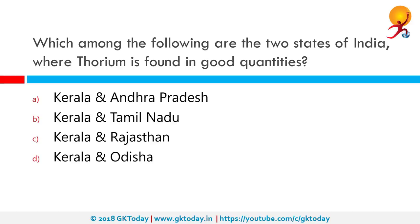Which among the following are the two states of India where thorium is found in good quantities? The correct answer is Kerala and Rajasthan. India has one of the largest supplies of thorium in the world with comparatively poor quantities of uranium. India has projected meeting as much as 30% of its electrical demands through thorium by 2050.